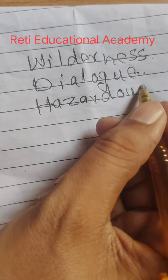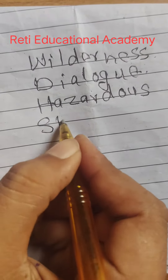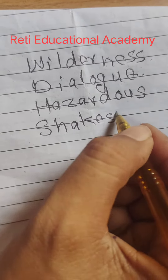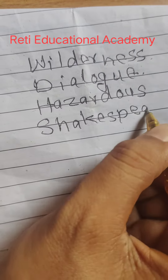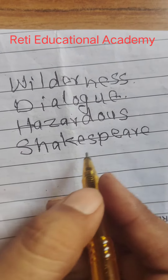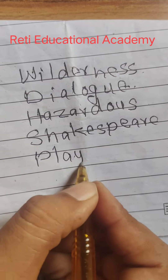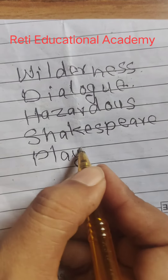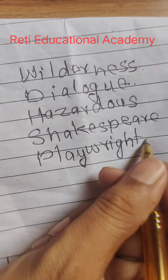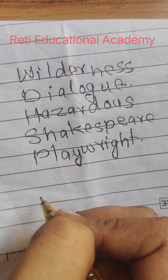Number 4: Shakespeare — S H A K E S P E A R E. And number 5: Playwright — P L A Y W R I G H T. Subscribe to Rathi Educational Academy for more solved papers.